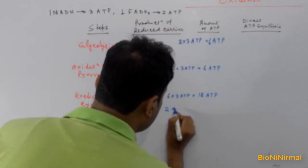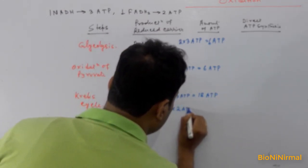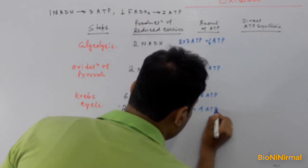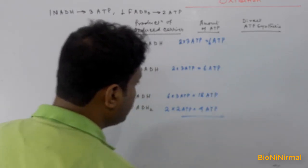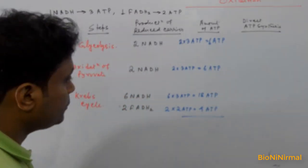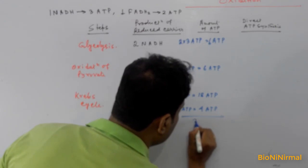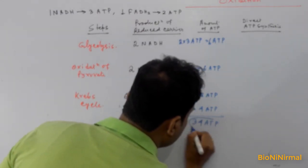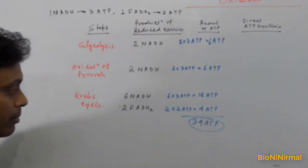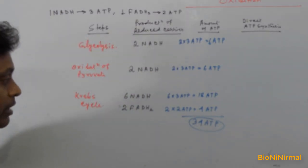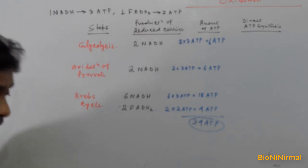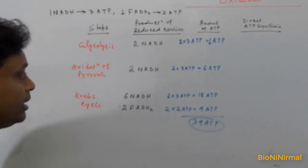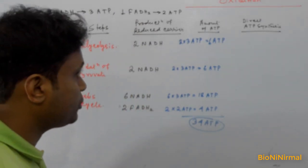The two FADH2 from the Krebs cycle each produce two ATP, giving four ATP. So total ATP from reduced carriers via the electron transport system: six plus six plus eighteen plus four equals thirty-four ATP. A huge amount of ATP is produced by the electron transport system from the reduced electron carriers NADH and FADH2.